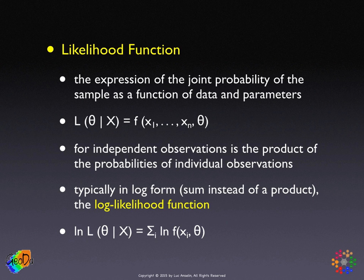In a Bayesian approach, the likelihood is written the other way around — the data conditional on the value of the parameter. That's a subtle distinction, but mathematically the likelihood, the joint probability itself, is the same.